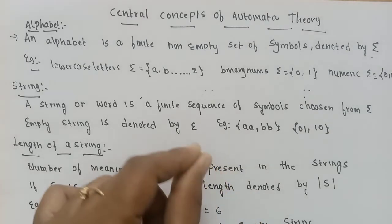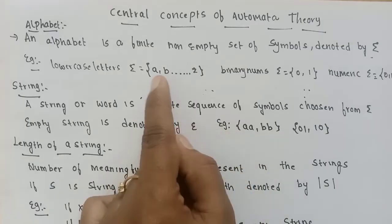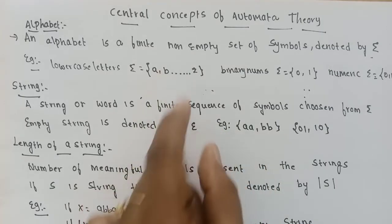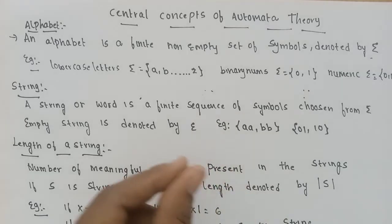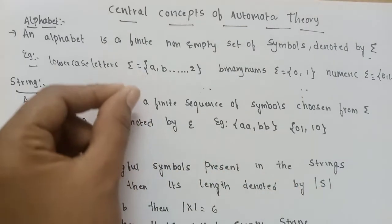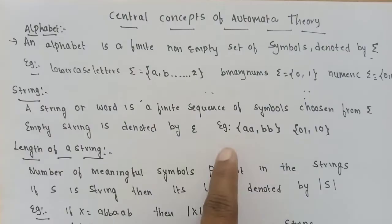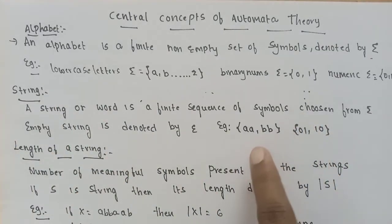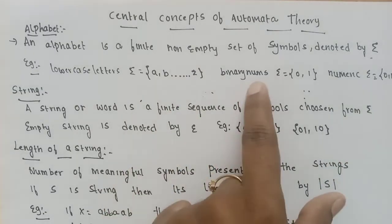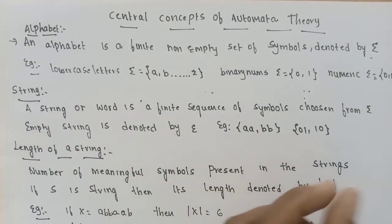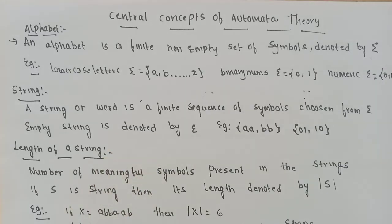For example, if the alphabet set is the lowercase letter set, then strings like 'a', 'ab', 'abb', 'abba' and so on can be formed. Similarly, if the alphabet set is binary numbers — 0 and 1 — then strings like '0', '1', '10', '110', '1110' and so on can be formed using that alphabet set.